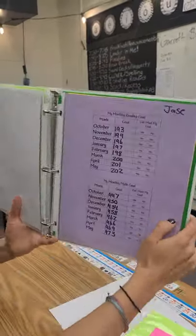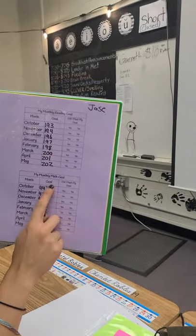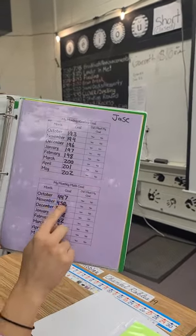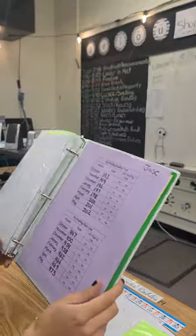This purple page is our monthly reading goals and our monthly math goals. So I went ahead and went in and saw all of the different.